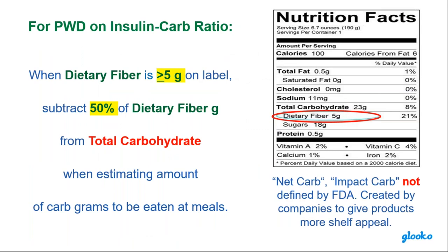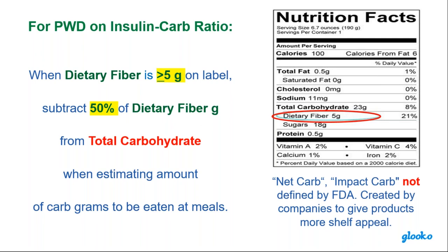For patients on insulin using carb counting: if the total dietary fiber on the label is 5 or more grams, subtract 50% of that total dietary fiber from the total carbohydrate on the label when estimating carb grams at the meal. That 50% of dietary fiber, when it's 5 or more grams, is really not going to be counted as carb in terms of carb-insulin ratios.